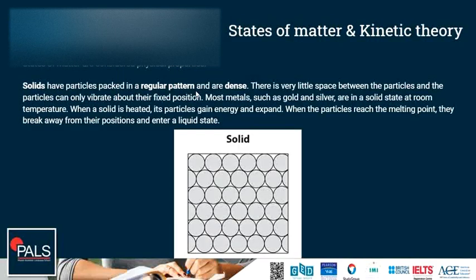Let's have a look at the different states of matter and the kinetic theory. The states of matter are considered as physical properties. Solids have particles packed in regular patterns and are very dense. There is very little space between the particles and the particles can only vibrate about their fixed position. Most metals, such as gold and silver, are in a solid state at room temperature. When a solid is heated, its particles gain energy, vibrate more strongly, need a little bit more space, and they expand — this is called thermal expansion. When the particles reach the melting point, they break away from their position and enter the liquid state.